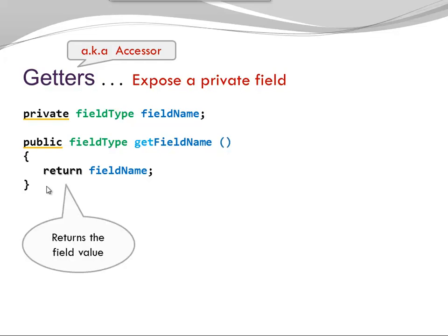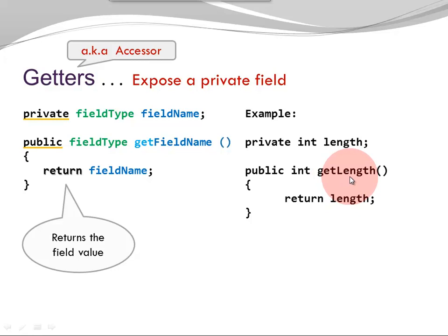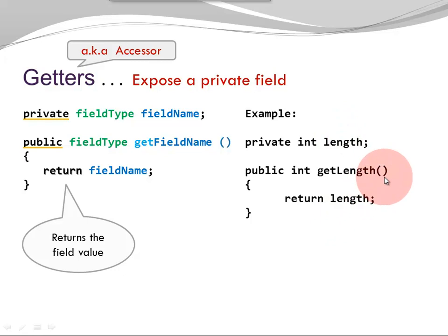Here you can see — very important — the field has to be returned. This is the purpose of the getter: to expose the field, to allow other classes to read the value of the field. For example, I have a field 'private int length' and a corresponding getter: 'public int getLength'. Notice the name — prefix 'get' plus the field name with uppercase L. Notice how my return type int and my field type int correlate, and I'm returning the field. No parameter.